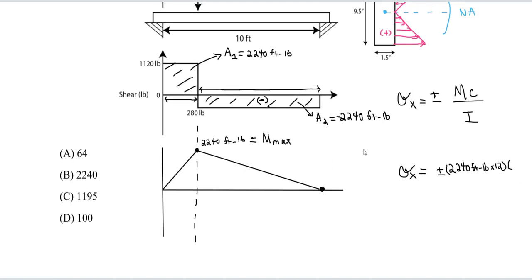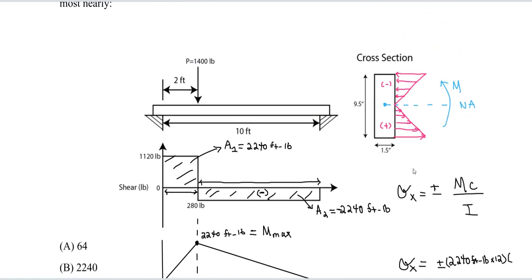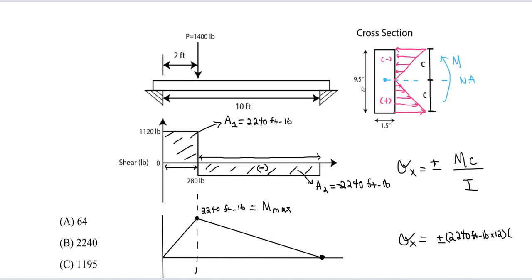Then we take our C value. Our C value is just the distance from the neutral axis to the outermost fiber. This is our C value here for the top portion, and this is the C value for the bottom portion. In this case, the C value is going to be the same for both the compression and the tension. So we're just going to plug in that value since it's symmetric. You do 9.5 divided by 2, so I got 4.75 inches.